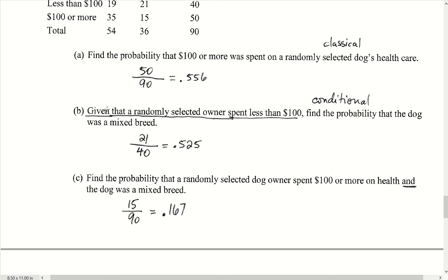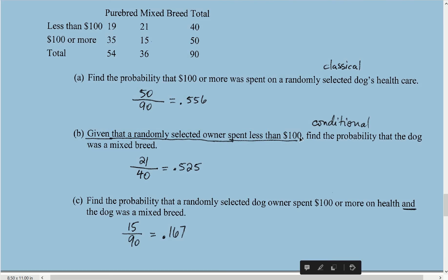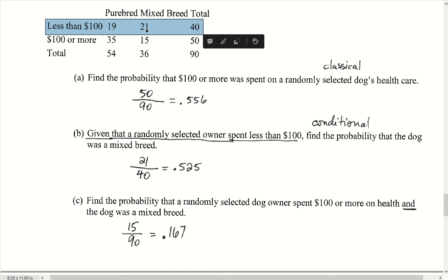Part B asks: given that a randomly selected owner spent less than $100, find the probability that the dog was a mixed breed. The word 'given' tells us the owner spent less than $100, so we restrict to that subset of 40 dogs. Of those 40, 21 were mixed breed, so the probability is 21 out of 40, which is 0.525.